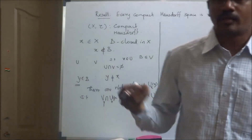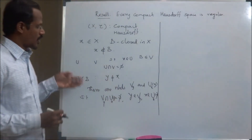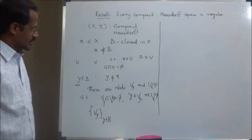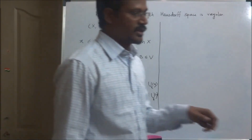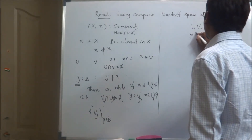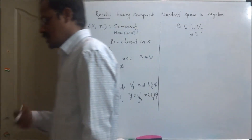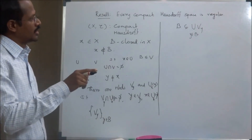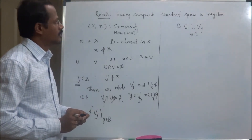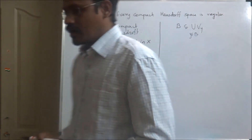Because we chose y as an arbitrary point, this is true for every point in B. If we range y over all points of B, we get a collection of neighborhoods V_y such that each V_y is an open set containing y. Therefore, the union of V_y as y varies over B contains the set B. So B is a subset of the union of V_y, where each V_y is an open set in X. Therefore we are getting an open cover for the set B.